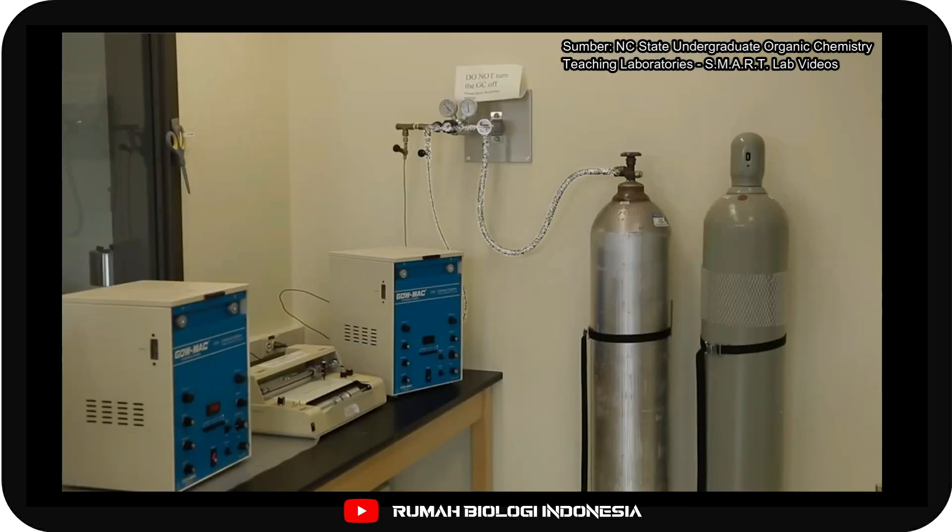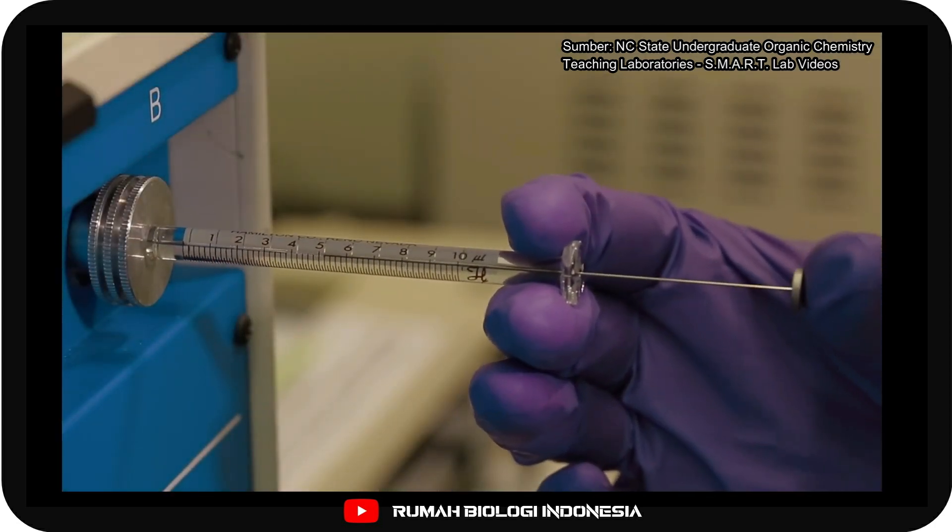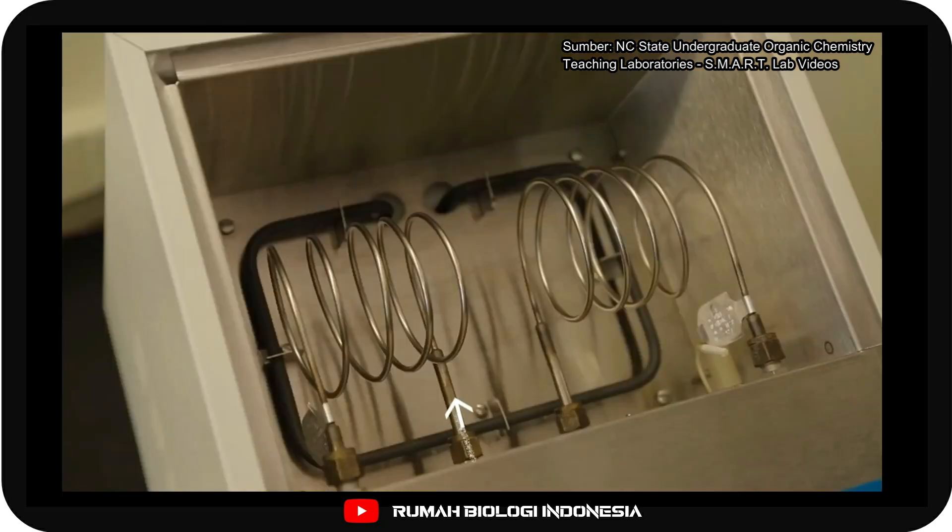Helium runs through the column and is the mobile phase. A sample injected into the gas chromatograph is instantly vaporized in a heated injection chamber so that the components are in the gas phase and then it flows through the column.